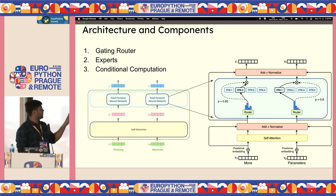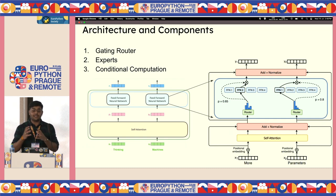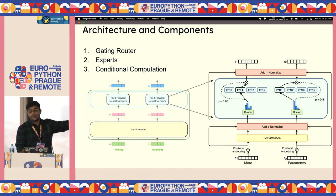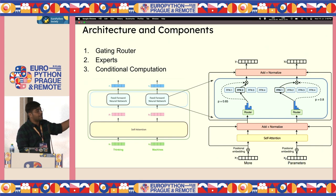Coming to the core architecture and components. The gating router is the deciding manager — like a manager who knows individual strengths and assigns tasks accordingly. The experts are the executors — like employees being managed by a manager. The core part is conditional computation, where there's a lot of variation: do you apply softmax after predicting probabilities, or select top two or three first and then softmax? Do you pick one expert or multiple? These choices add significant tuning advantage.